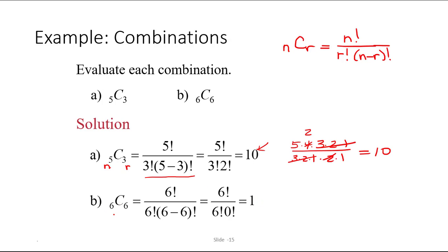And then look what we get for 6C6. So if n is 6 and r is 6, we're selecting all 6 objects from a set of 6 objects. So notice that there's only one way to do it. So it makes sense that it would turn out to be 1.